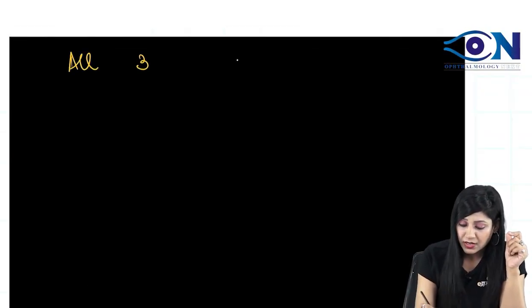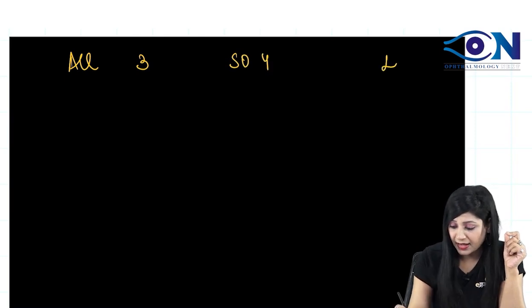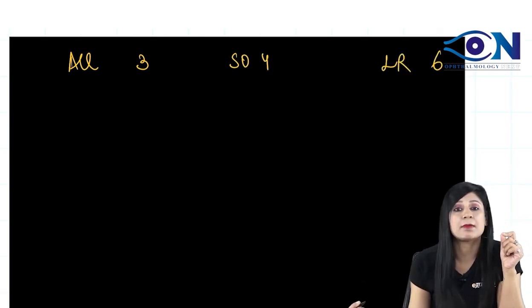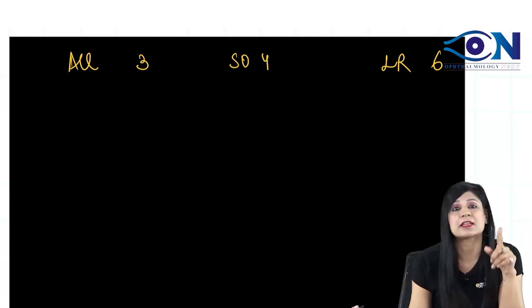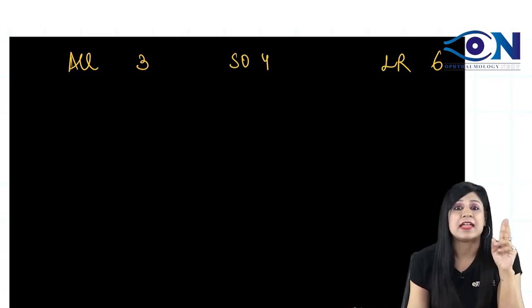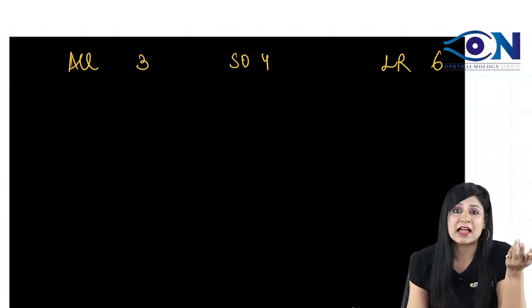Now, how do we get this? Always remember a simple thing: all three SO4 and LR6. Remember that all the extraocular muscles are supplied by third cranial nerve except for SO4 and the LR6.